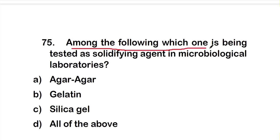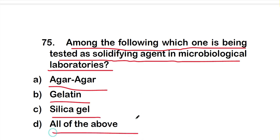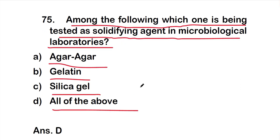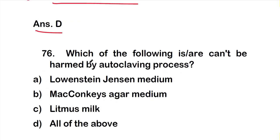Question number 75: Among the following, which is used as a solidifying agent in microbiological laboratories? Options are: A) agar-agar, B) gelatin, C) silica gel, D) all of the above. The right answer is option D — agar-agar, gelatin, and silica gel are all used as solidifying agents.